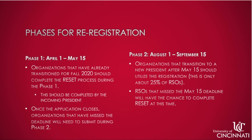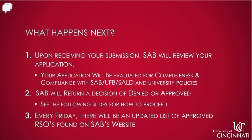Organizations that have already transitioned for Fall 2020 should complete the RESET process during Phase 1. Please note that the incoming president should be filling out this application. Once the application closes, organizations that have missed the deadline will need to submit during Phase 2. Organizations that transition to a new president after May 15th should re-register during Phase 2. If your organization missed the Phase 1 re-registration period, you may complete RESET at this time. Upon receiving your submission, SAB will review your application for completeness and compliance with SAB, UFB, SALD, and university policies. SAB will then return a decision of denied or approved. Every Friday, there will be an updated list of approved RSOs found on SAB's website.